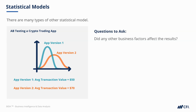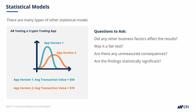Questions we might ask are: did any other business factors affect the results, and therefore was it a fair test? Are there any unmeasured consequences we haven't captured — for example, does app 2 come across too salesy and therefore damage our reputation in the longer term? And finally, are the findings statistically significant? All of these questions are going to help us answer the app 1 vs. app 2 question in the context of the business scenario.